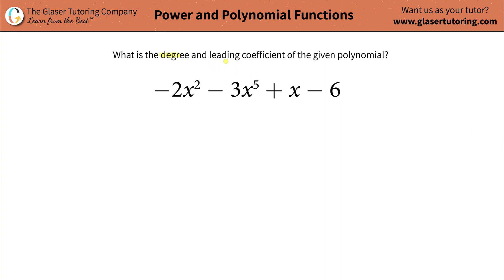What is the degree and leading coefficient of the given polynomial? Negative 2x squared minus 3x to the fifth plus x minus 6.